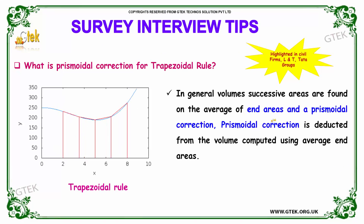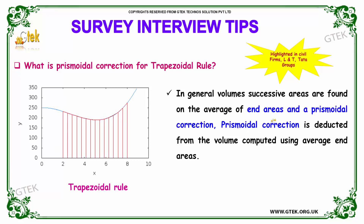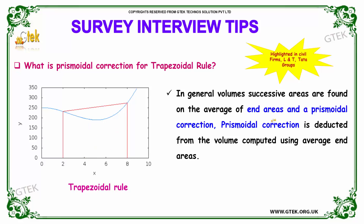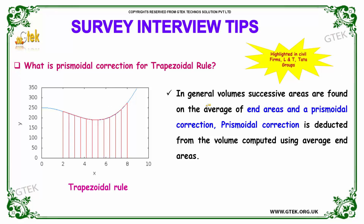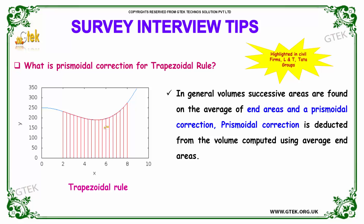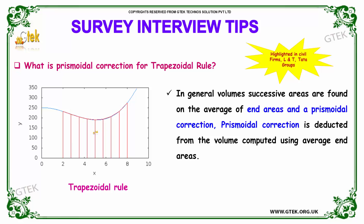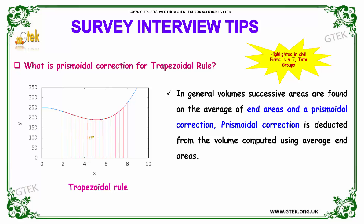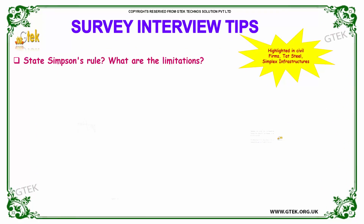Our next question is: what is prismoidal correction for the trapezoidal rule? The general volumes of successive areas are found using an average of the end areas plus a prismoidal correction. The prismoidal correction is deducted from the volume computed using the average end areas.